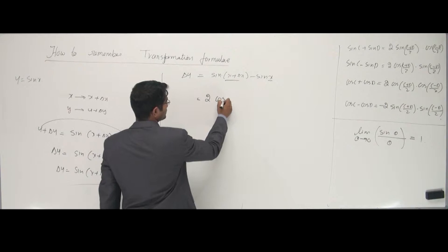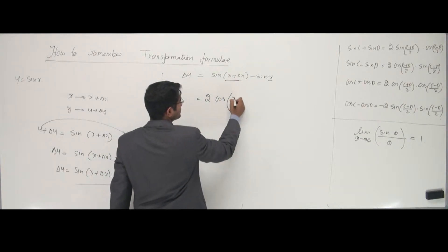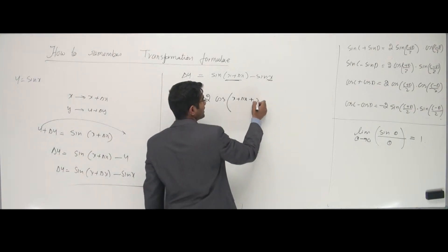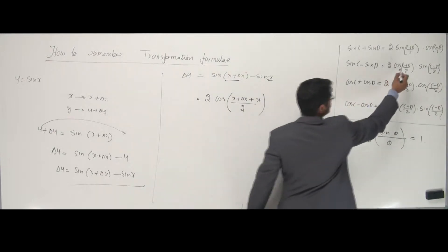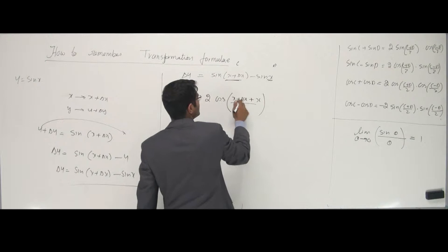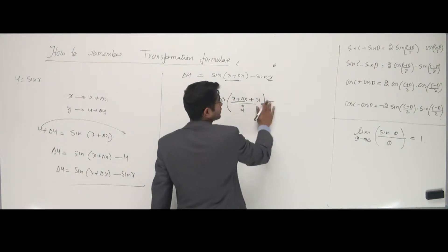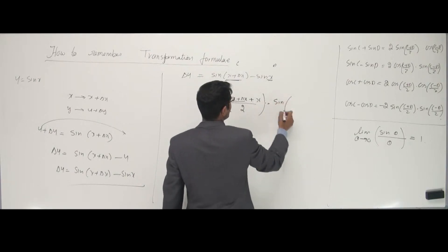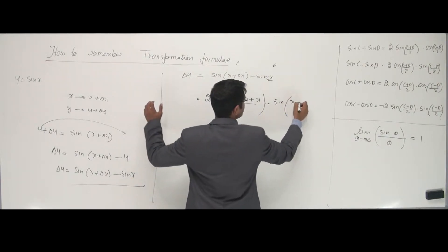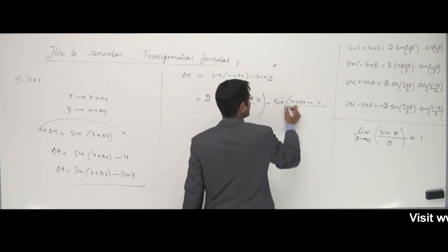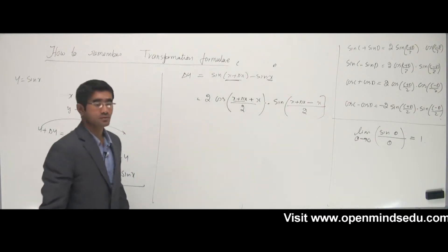Alright, if I use the transformation formula, it goes like what? That is 2 cos. C is this guy, x plus delta x, plus d. D is x, alright? The whole thing divided by 2. This formula is c plus d by 2. So, c plus d by 2 into sine of c minus d. C is x plus delta x. C minus d is x. The whole thing divided by 2. This is what I have. That's my formula.